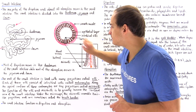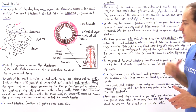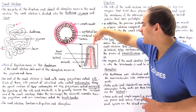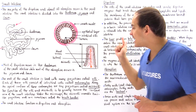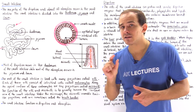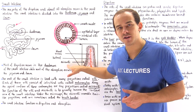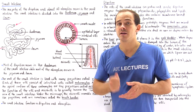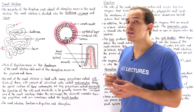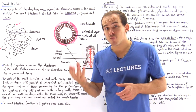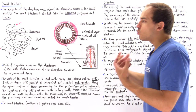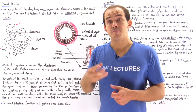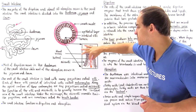Zooming in on a single villus, we see many intestinal cells called enterocytes along its border, and each enterocyte contains tiny hair-like projections known as microvilli. The villi and microvilli greatly increase the surface area of the small intestine, giving proteolytic enzymes more room to break down macromolecules. Once the macromolecules are broken down, they are absorbed by the enterocytes and move into either the blood system, shown in red, or the lymph system, shown in orange.